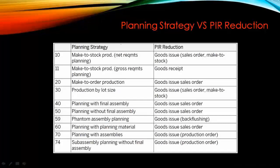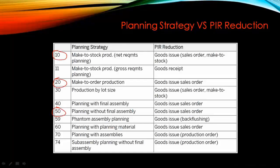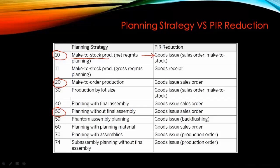After the goods issue for the sales order, the planned independent requirements that we entered will be reduced at that step, and then we start all over again — that's how the cycle goes on. Regarding planning strategies and PIR reduction, depending on what planning strategy you're using, the stage at which PIR reduction happens will differ. For example, in planning strategy 10 which is make-to-stock production, the PIR will only be reduced when goods issue happens.